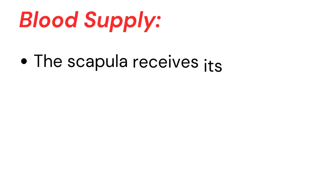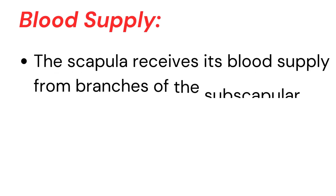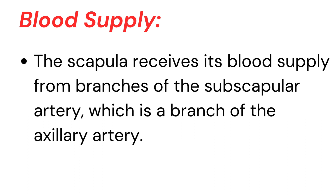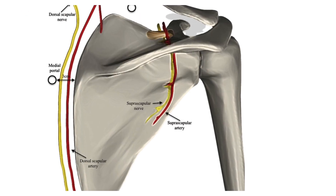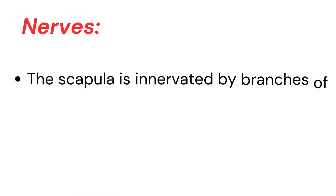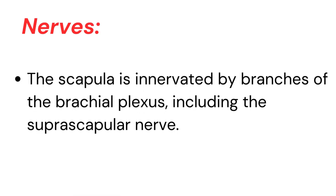Blood supply. The scapula receives its blood supply from branches of the subscapular artery, which is a branch of the axillary artery. Nerves. The scapula is innervated by branches of the brachial plexus, including the suprascapular nerve.